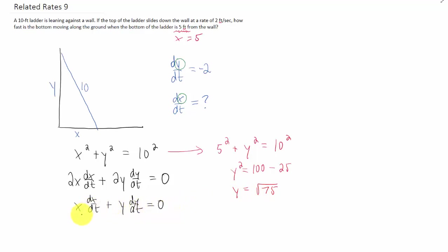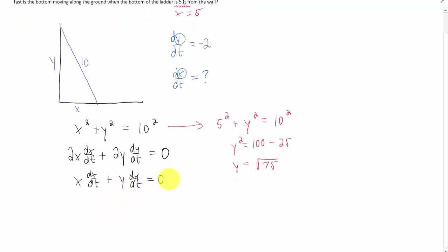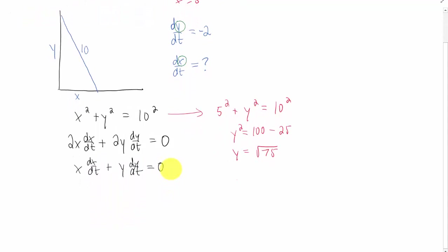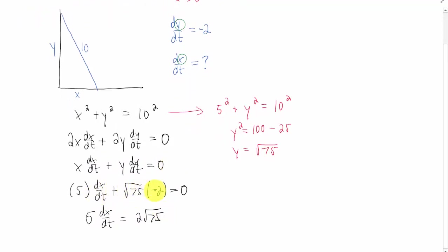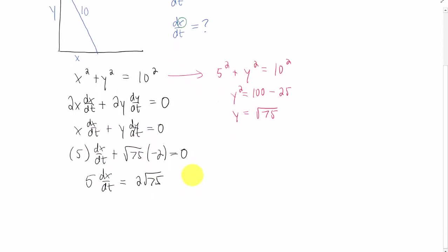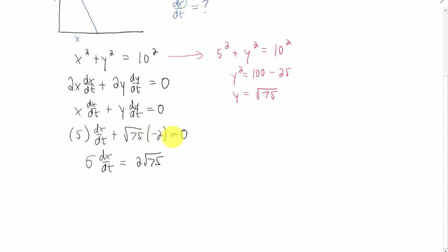Now we can plug all of our knowns into this equation, and we'll be finished. I plugged everything into our equation. I moved this term over to the right side of the equation. I need to divide by 5. This can be reduced.